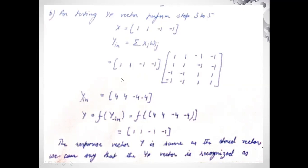Now we apply the threshold activation function: whenever the value is greater than 0, the output is 1; if less than 0, the output is -1. So passing [4, 4, -4, -4] through the activation function gives [1, 1, -1, -1]. The response vector Y is the same as the stored vector, meaning the network is correctly recognizing the input vector.